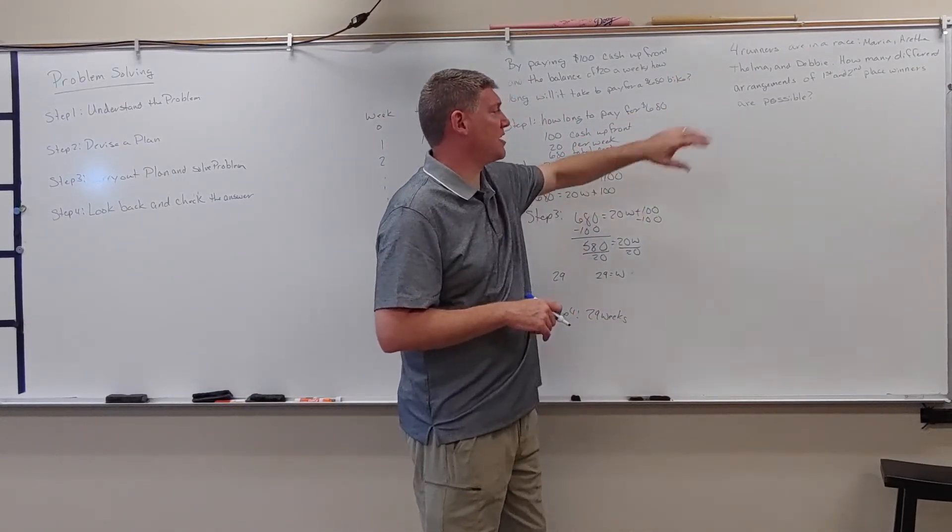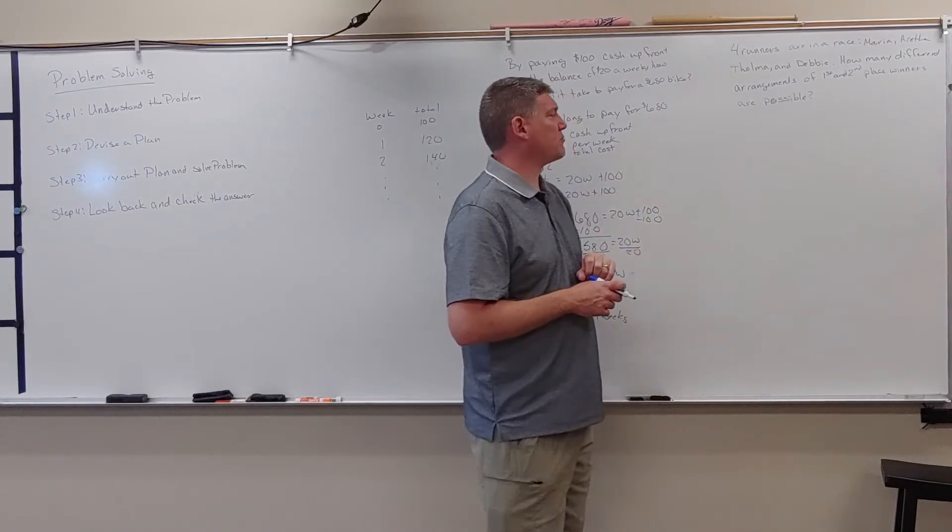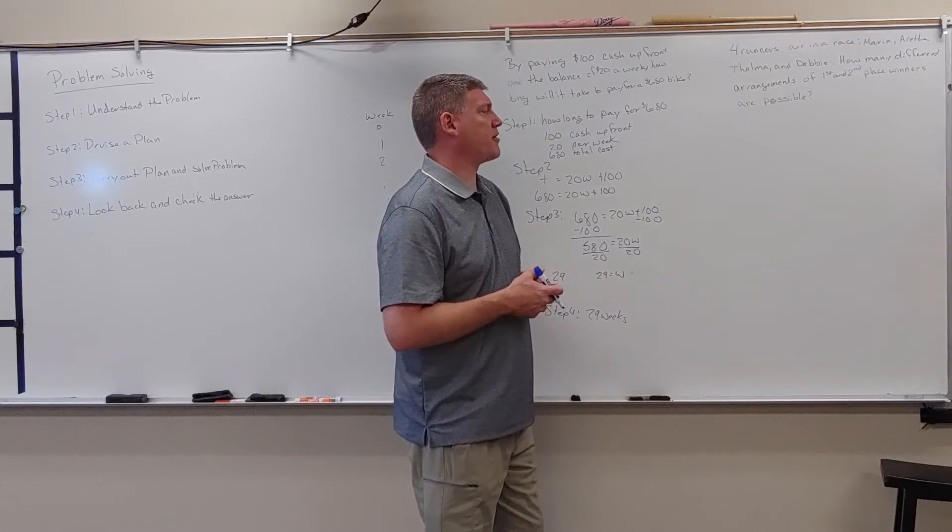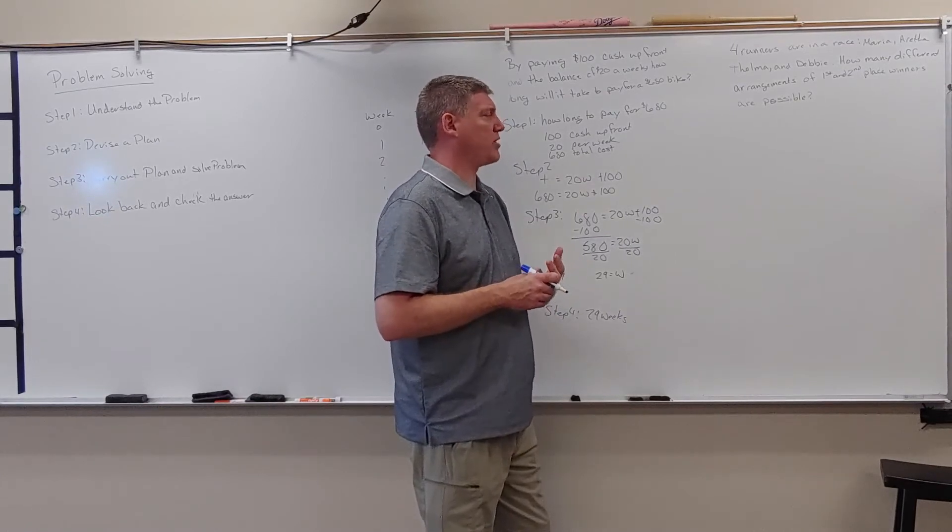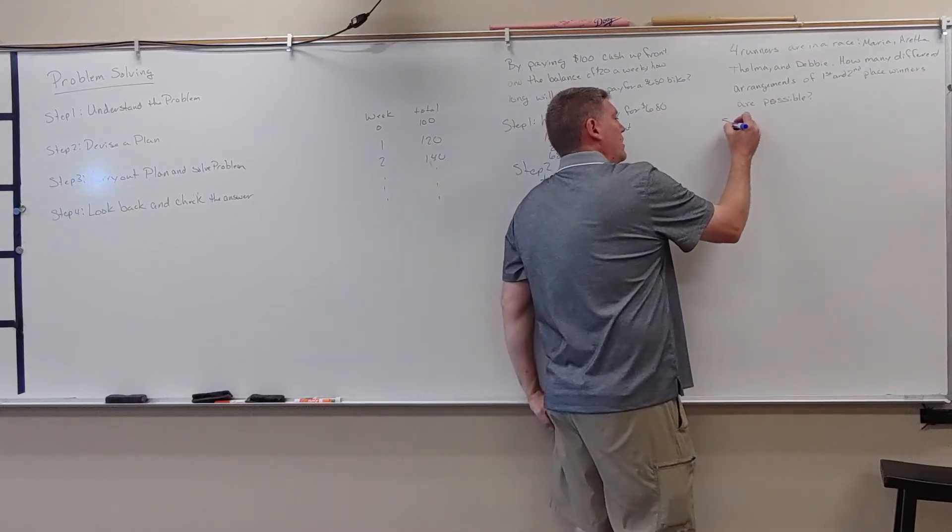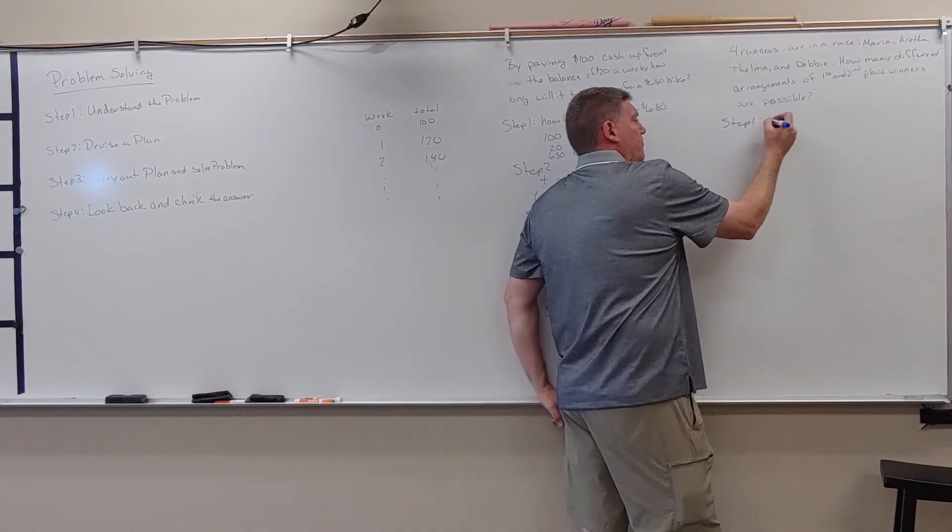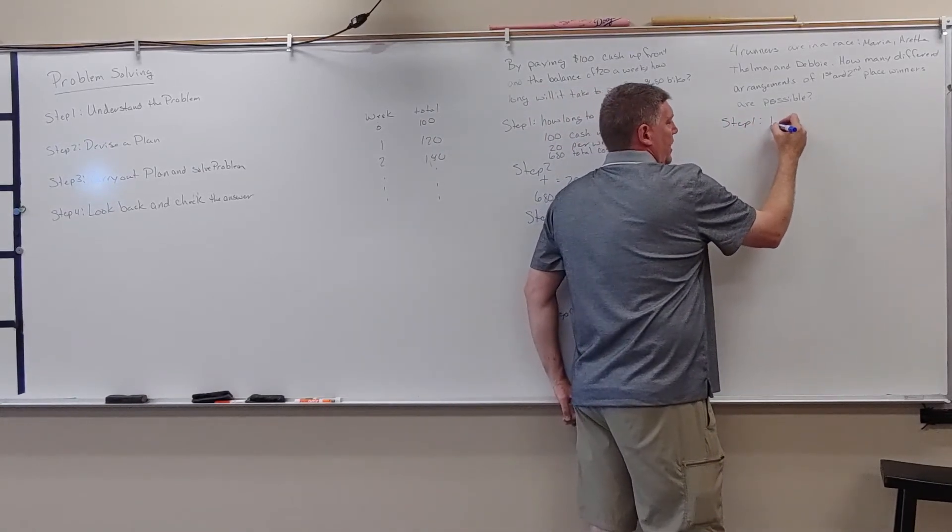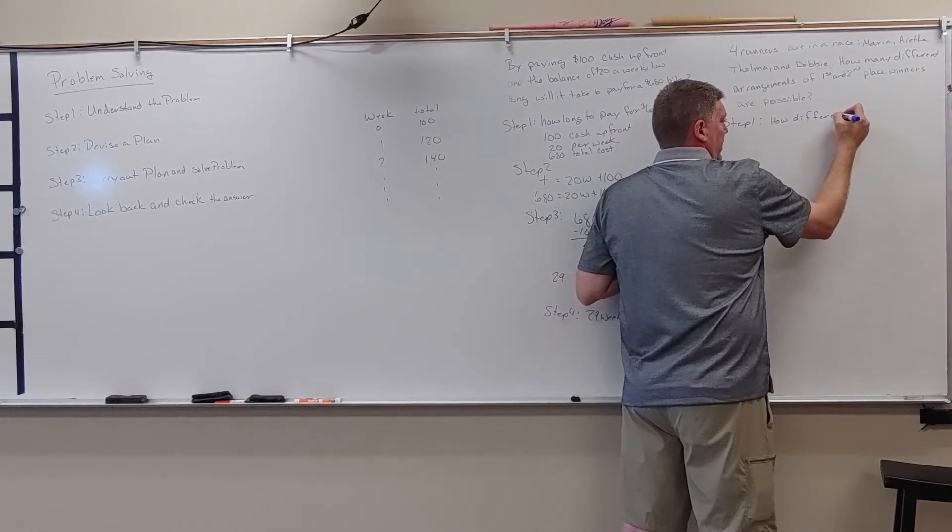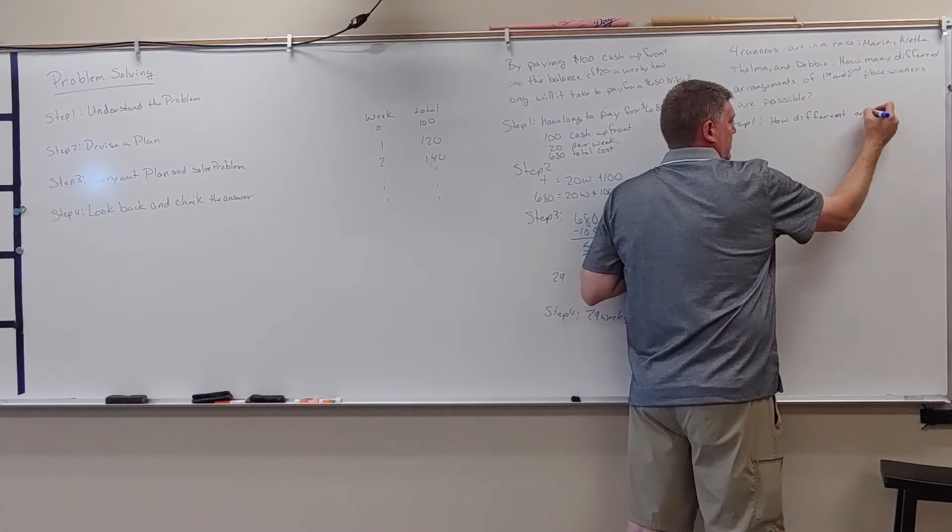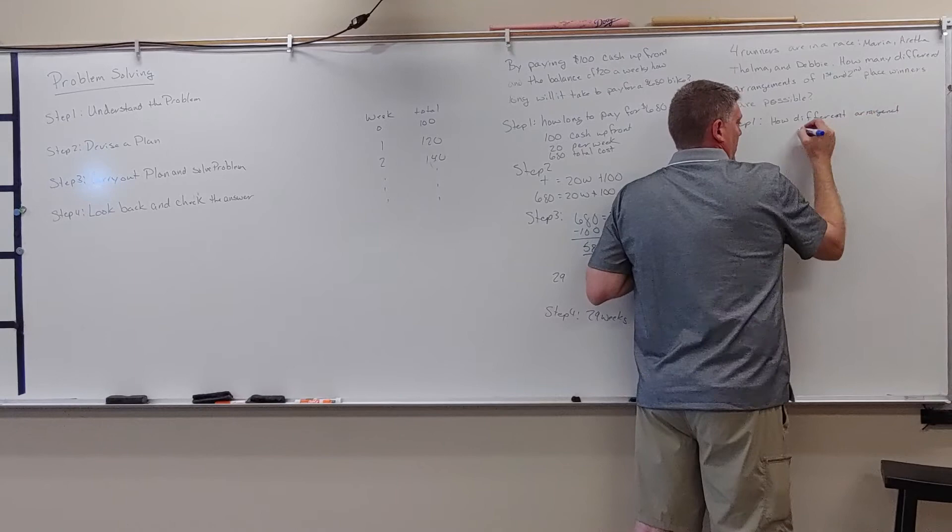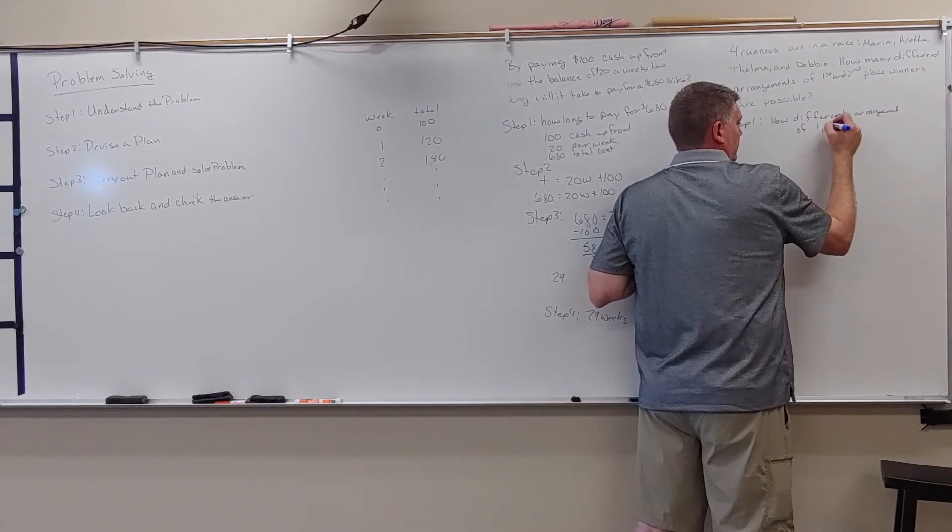So here in our last example, it says, four runners are in a race. Maria, Aretha, Thelma, and Debbie. How many different arrangements of first and second place winners are possible? So step one is identify the problem. How many different arrangements of first and second?